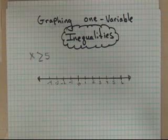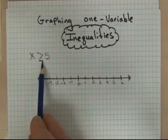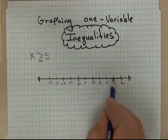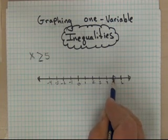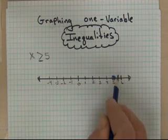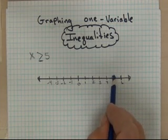Now we want all the values that are greater than or equal to 5. And so because we have this or equal to part, we want to show that the value can include the number 5. And we show that by putting a closed dot or closed circle on the number 5.